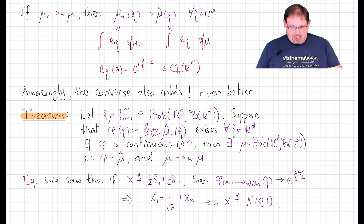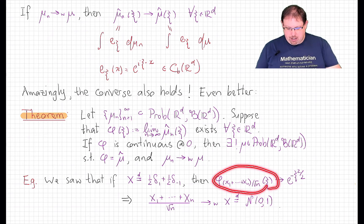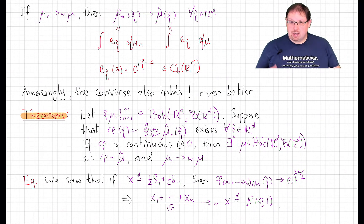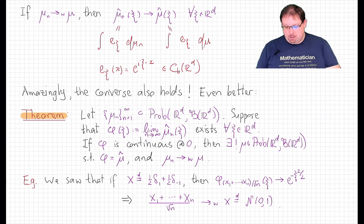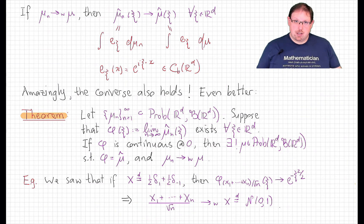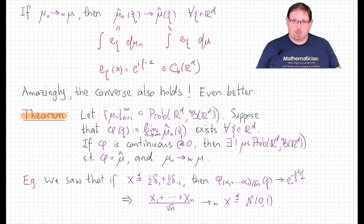For example, we saw that if X is a Rademacher random variable and we take independent copies of X, add them up, and standardize by dividing by the square root of n, then the characteristic function of that standardized sum converges pointwise to a specific function. We also computed explicitly that that function is the characteristic function of the standard normal distribution. Even if we didn't know that a priori, this function is continuous at zero, and therefore by the continuity theorem, this standardized sum converges weakly to the standard normal distribution.